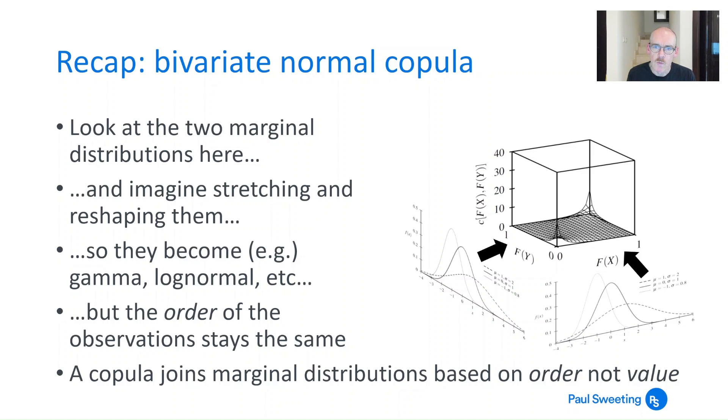What you're essentially doing there is you're taking whatever marginal distribution you've got and then you're just stretching and reshaping it so that it becomes something else but the order of the observations stays exactly the same. This is a really important point: copulas join marginal distributions based on the order of those distributions, so the distribution functions, not the value of those distributions.